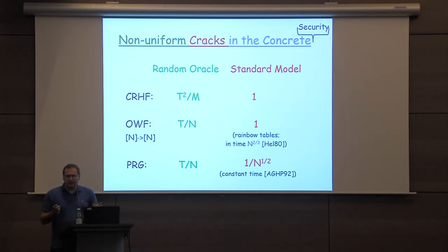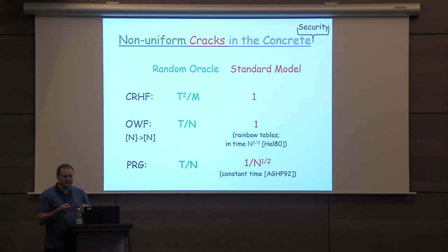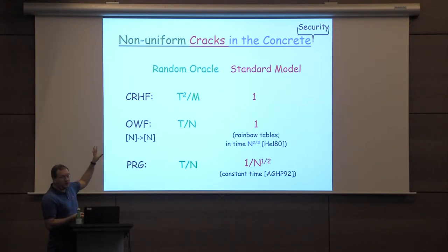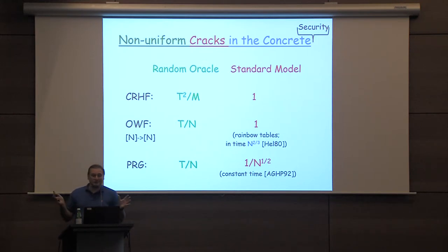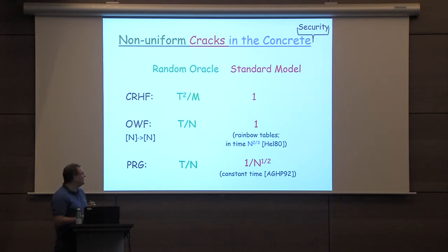Of course, if you look carefully — especially if you come from a practical side — some of these attacks, like hardwiring a collision or finding heavy Fourier coefficients, are non-uniform attacks. So before you storm out of the room and say he's cheating — who cares? Let's actually look more carefully at why it's actually relevant, not just in theory but also in practice. Let me remind you about non-uniform adversaries.